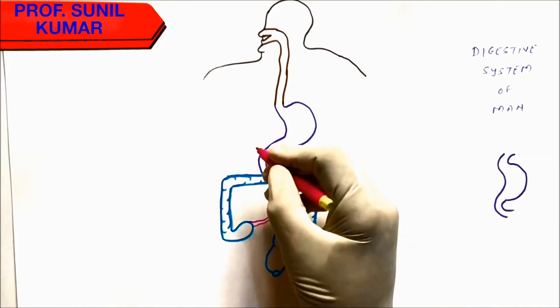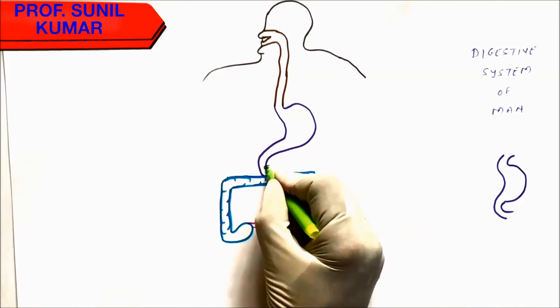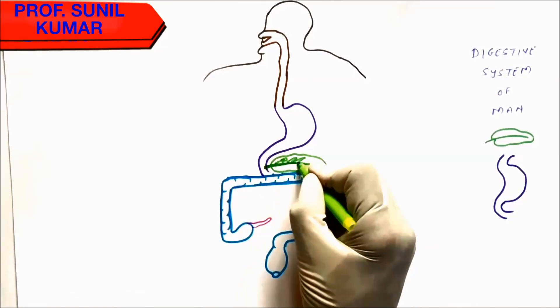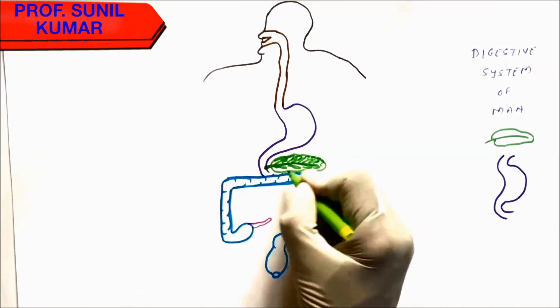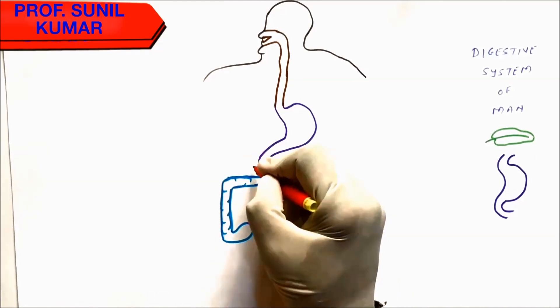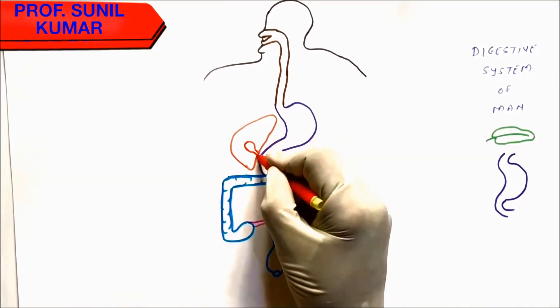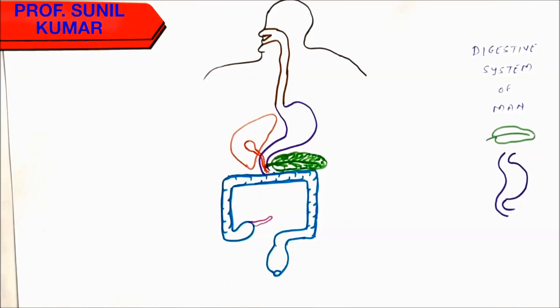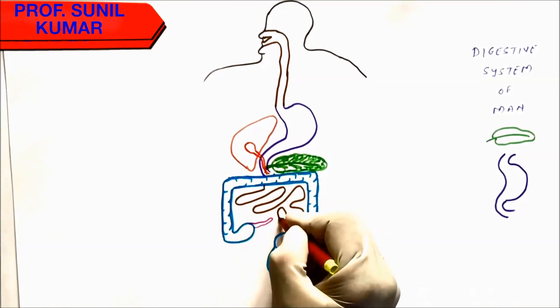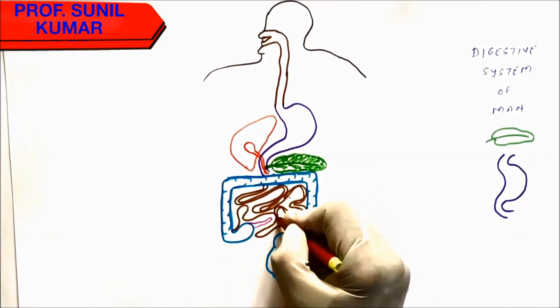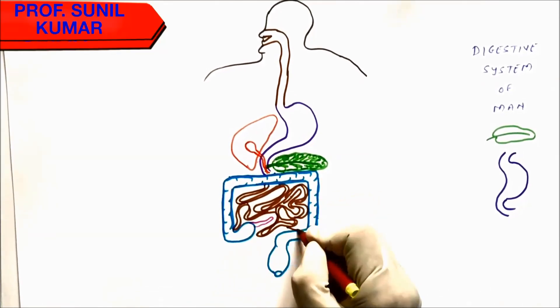Now we're going to draw the vermiform appendix. Now draw the pancreas—it's a leaf-like structure, the same leaf we drew in school. Now we need to draw the liver. It's very easy—just put a triangular part with some blunt end and the gallbladder. While drawing the small intestine, just draw a coiled tube. There is no fixed shape to the small intestine, so you can draw it any way you want.